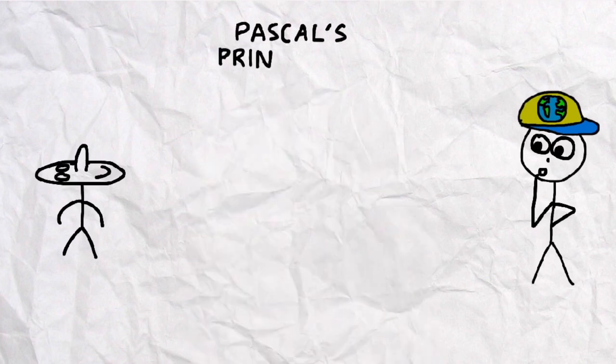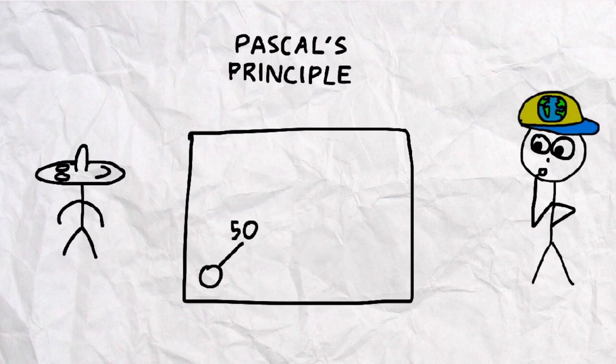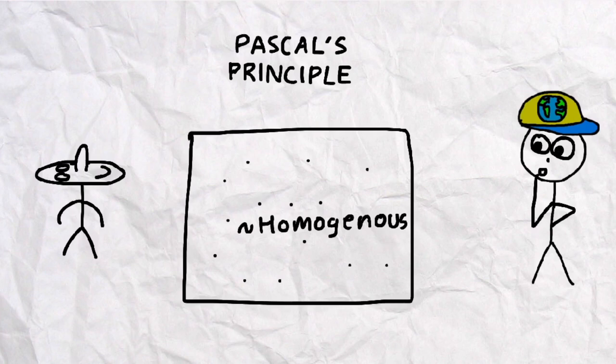One is Pascal's Principle, which says that the air pressure within a container will be the same everywhere. This makes sense if you think about the air molecules inside, for example, a bicycle tire. If there was higher air pressure on one side, then the air molecules would be pushed over to the low pressure side, until everything else is evened out.